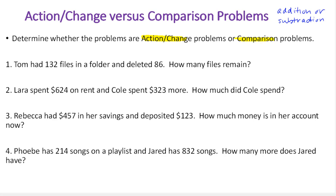An action change problem is when there's some initial amount and then you're either going to add or subtract some change. For example, you have five dollars and you spend two, or you have five dollars and you earn three. There's an initial amount, then some change, and you're finding the result.